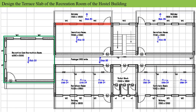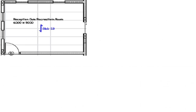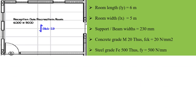We are going to design a terrace slab for the recreational room of a hostel building. The basic information: room length is 6 m, room width is 5 m, support beam width is 230 mm on all sides, grade of concrete is M20, and grade of steel is Fe 500.